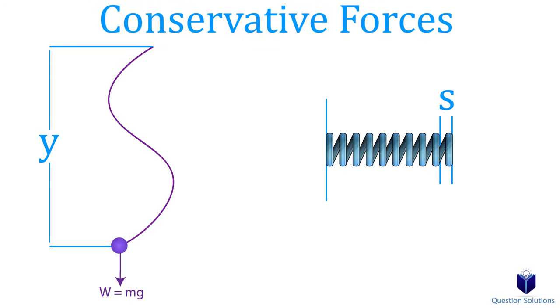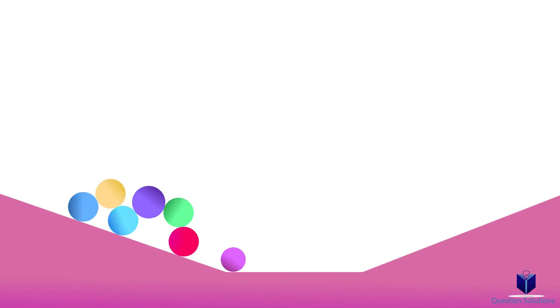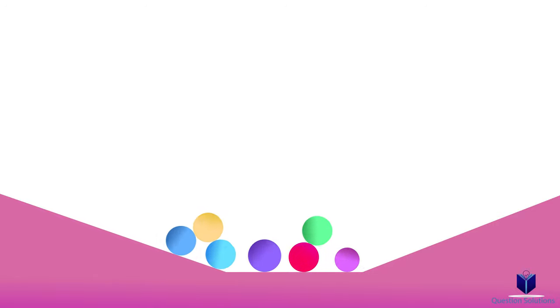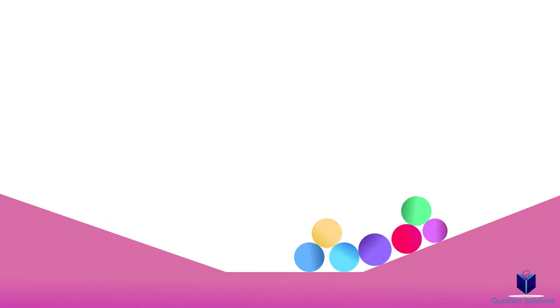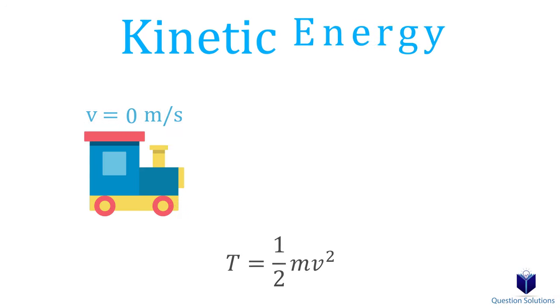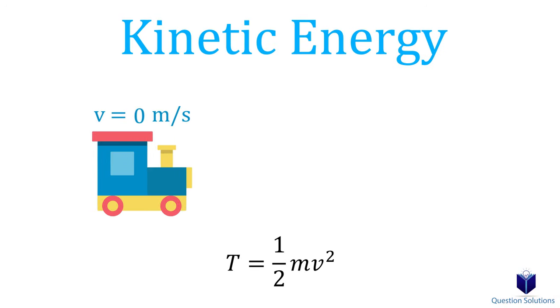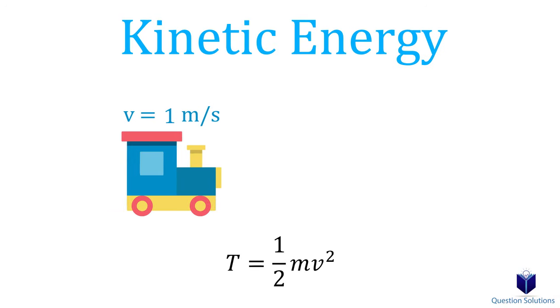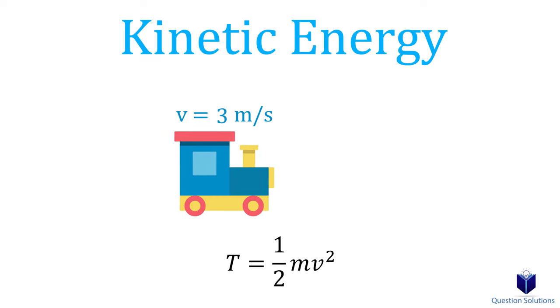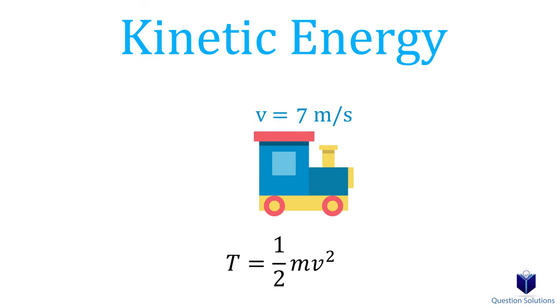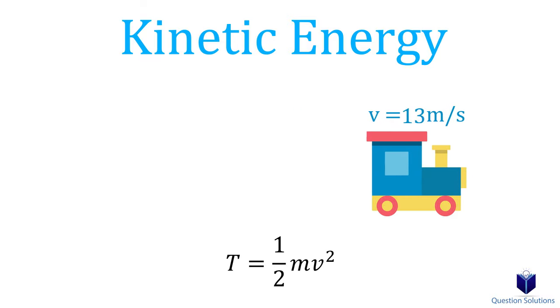So we've talked about the conservative part, now let's talk about the energy part. Energy is basically the capacity for doing work. Kinetic energy is the work that needs to be done if we want to bring a particle from rest to a certain speed.